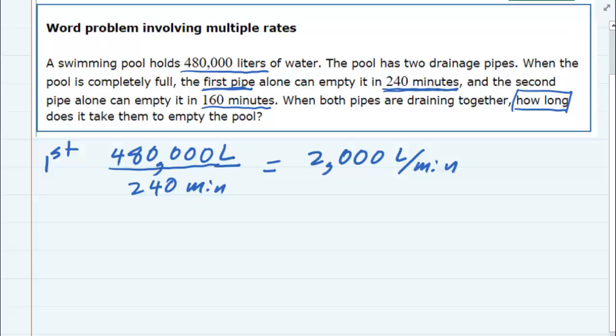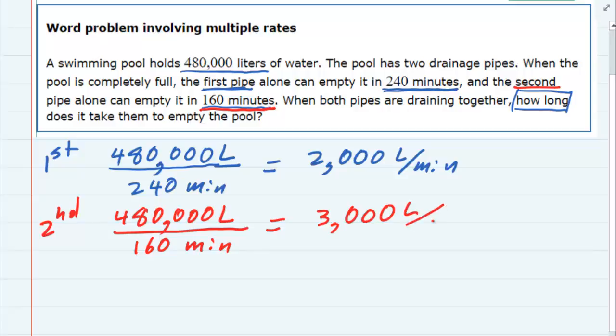So that's the rate for the first pipe and then the second pipe takes 160 minutes. So the second one is going to drain that same pool 480,000 liters. It's going to drain it in 160 minutes. So it's moving at a rate of 3,000 liters per minute. Notice it's going faster and that's why it takes less time compared to the 240.